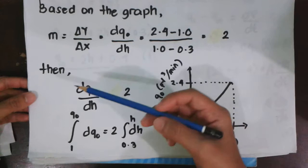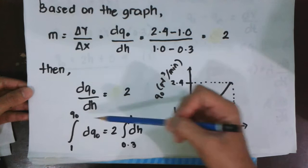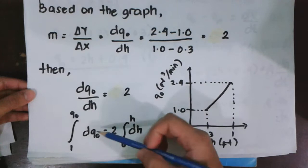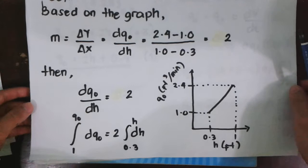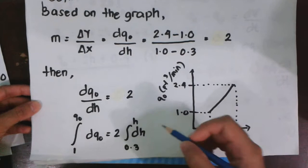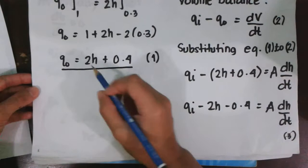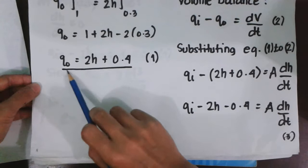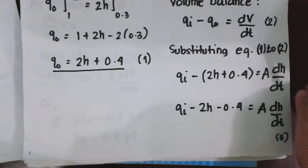Then, we can also arrive at the differential equations by integrating this equation. The integral of dQo from 1 to Qo is equal to 2 times the integral of dH from 0.3 to H. So we can obtain this relationship: Qo is equal to 2H plus 0.4. Then let's proceed to the volume balance.